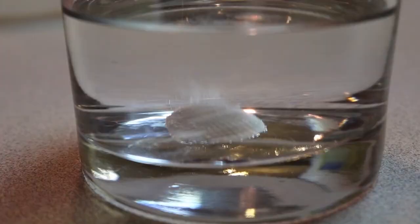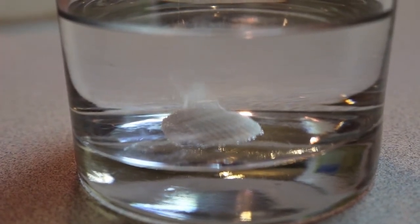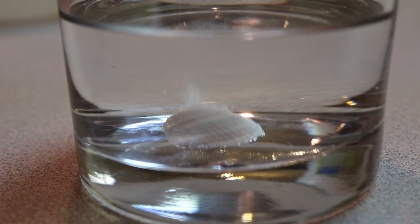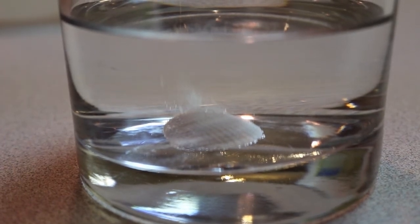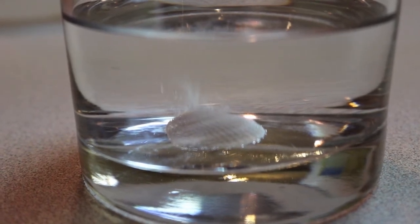What do you notice? See all the bubbles coming from the shell in the vinegar? Vinegar is acidic, and those hydrogen ions are reacting with the shell. As they react, it releases carbon dioxide as byproducts. That's the bubbles that you're seeing.